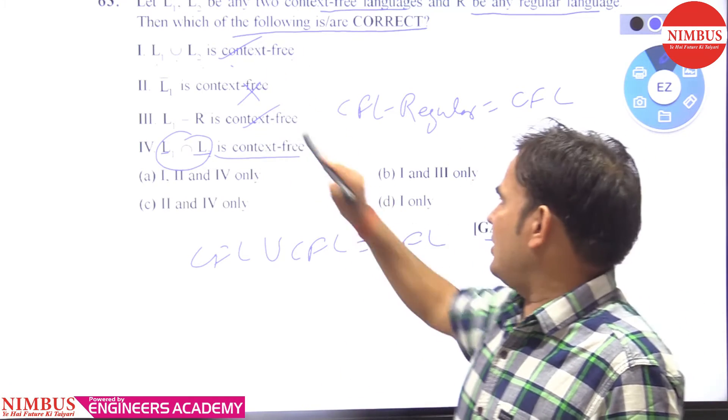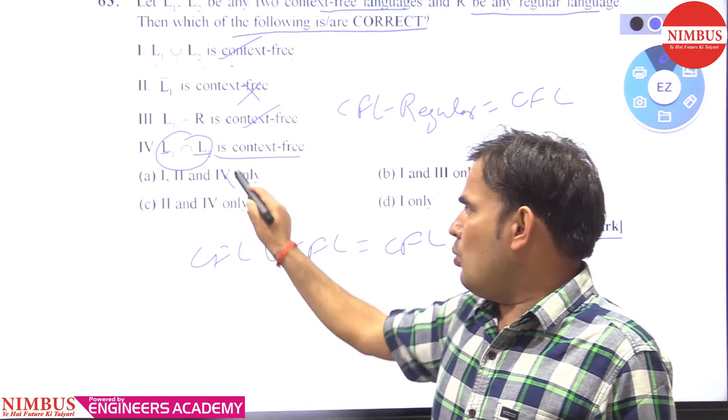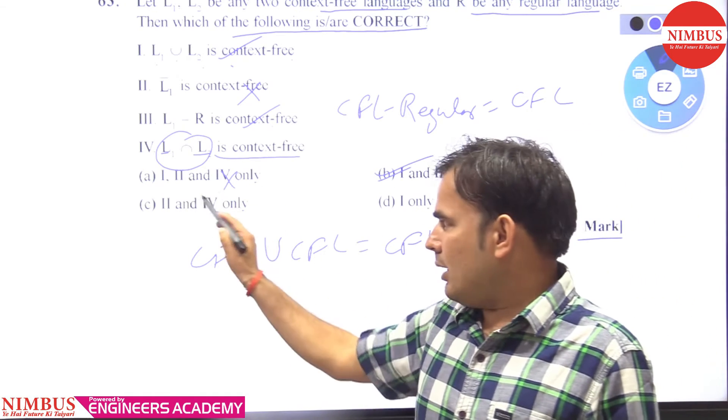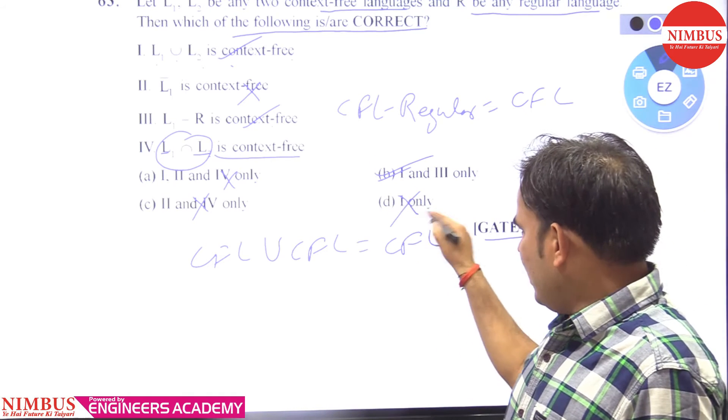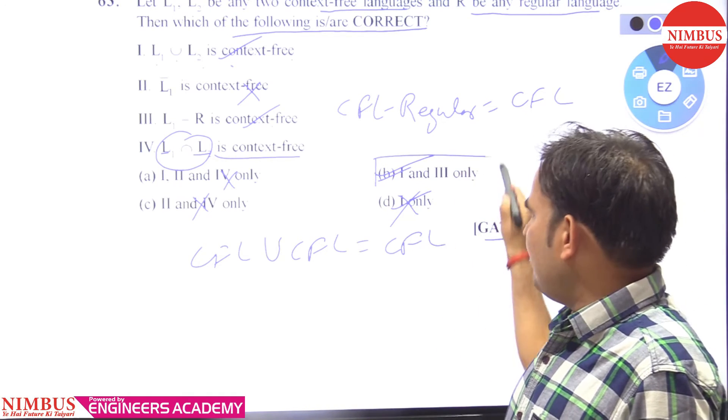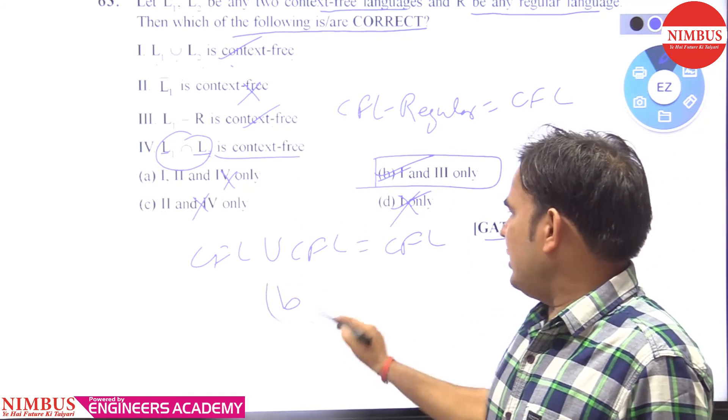Which one is true? First and third is true. First, second and third? No. First and third, yes. First and third is true. Second and fourth? Not true. First only? Not true. First only is true but third is also true. That's why option B is correct. First and third only.